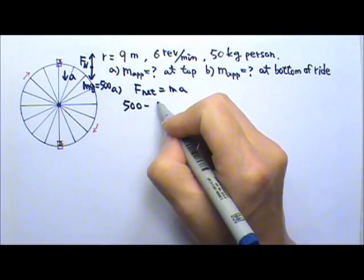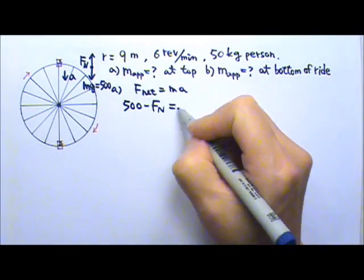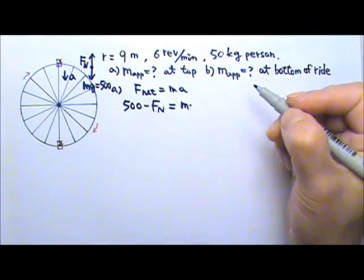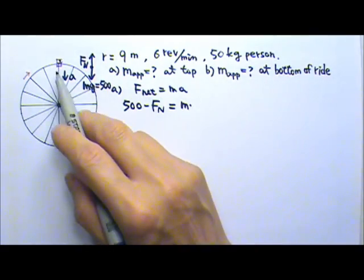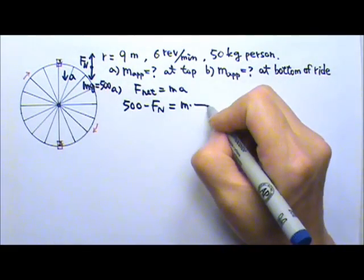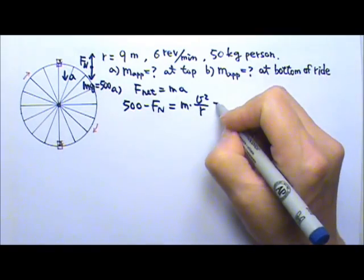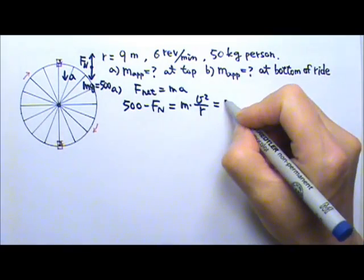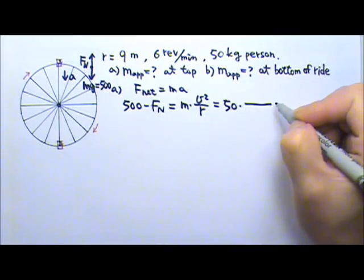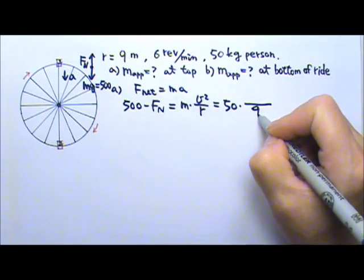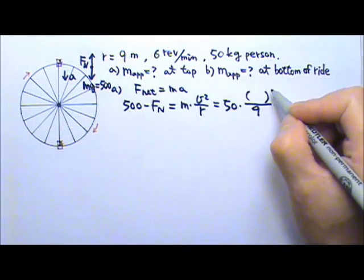And for net force, we do the bigger side minus the smaller side equals to M times A. That's the centripetal acceleration, V squared over R. So this is 50 times, we know the radius is 9, but what is the speed?